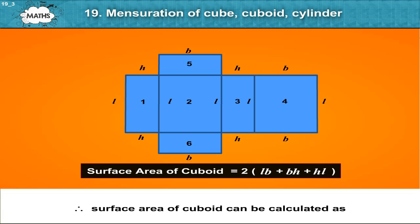Therefore, surface area of cuboid is equal to 2 times length into breadth plus breadth into height plus height into length.